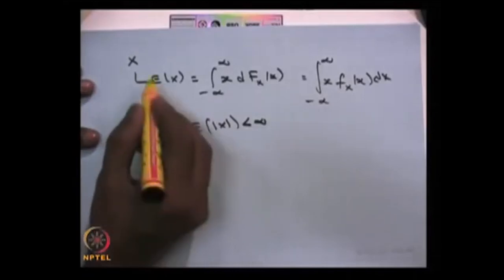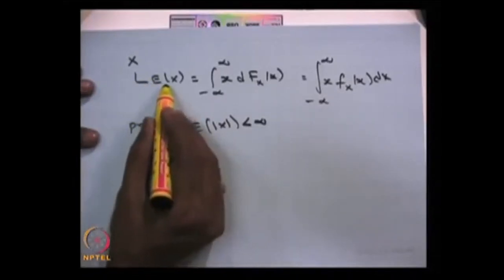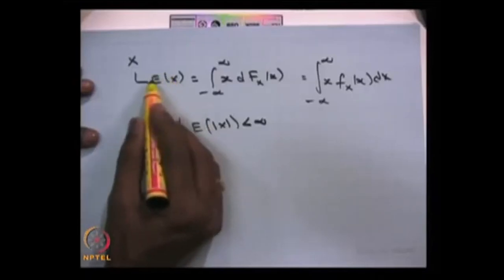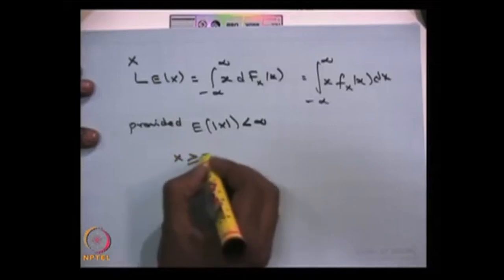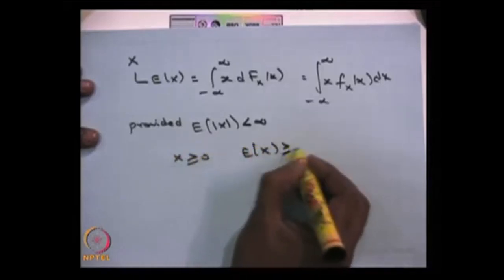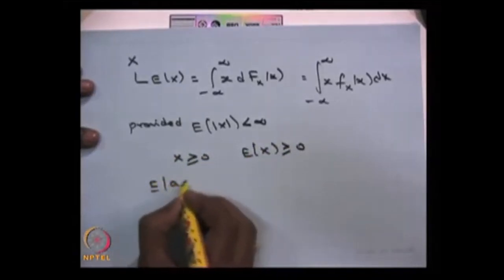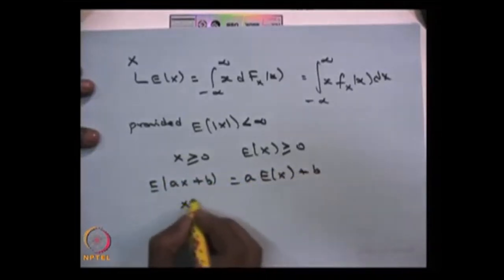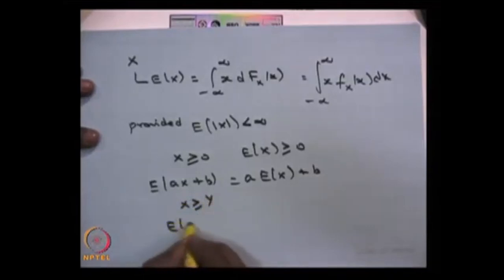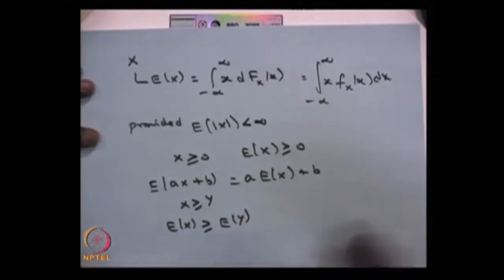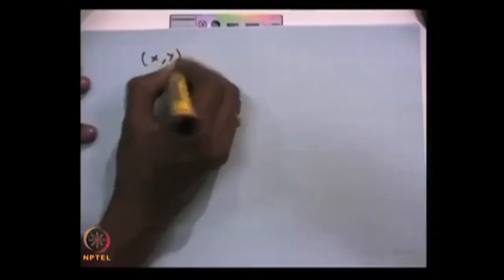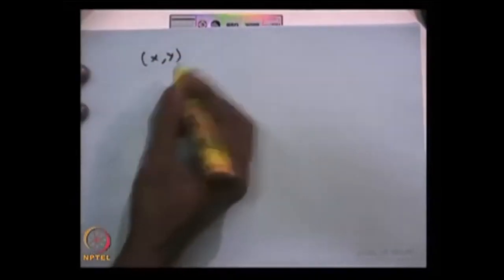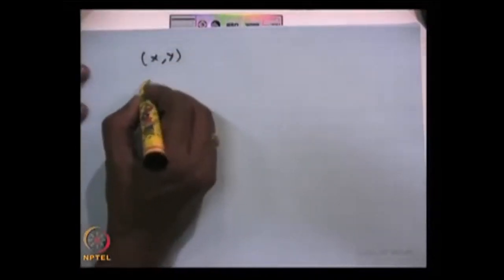The expectation of a random variable has a few properties: it is always a constant, not a random variable. If the random variable X is greater than or equal to 0, then the expectation of X is always greater than or equal to 0, and expectation has a linear property. If you have two random variables and X ≥ Y, then E[X] ≥ E[Y]. We can also find the variance of the random variable.